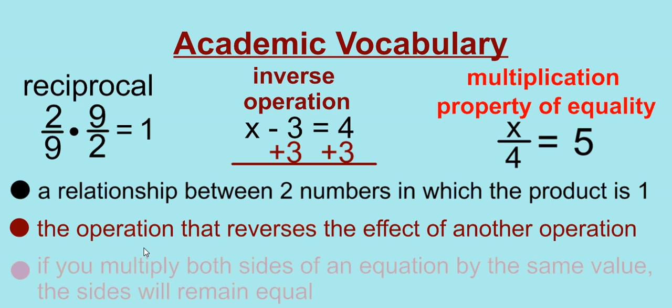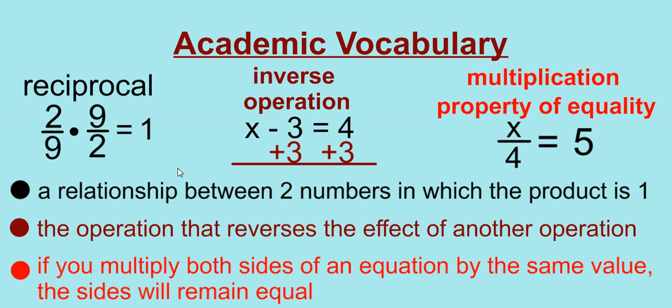And finally, we have our multiplication property of equality. If you multiply both sides of an equation by the same value, then the sides will remain equal. That's what our multiplication property of equality states.